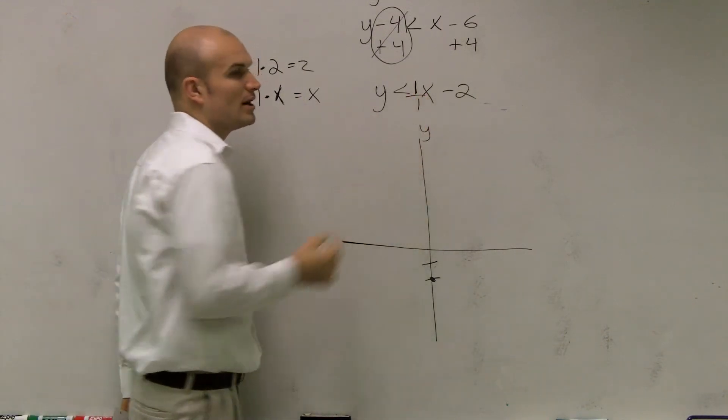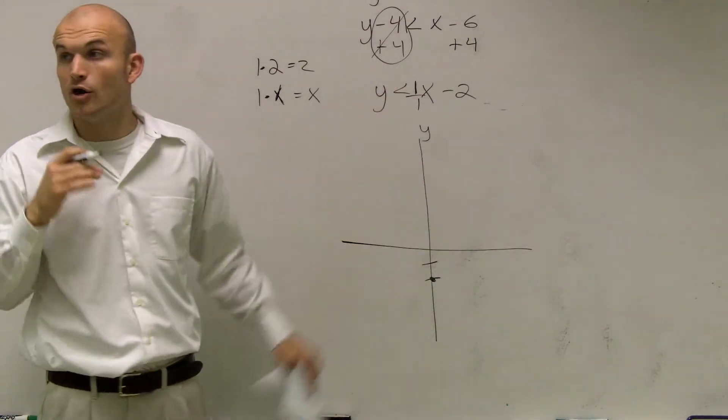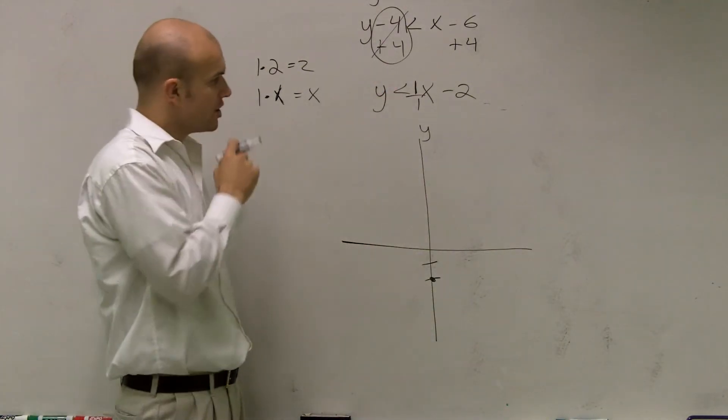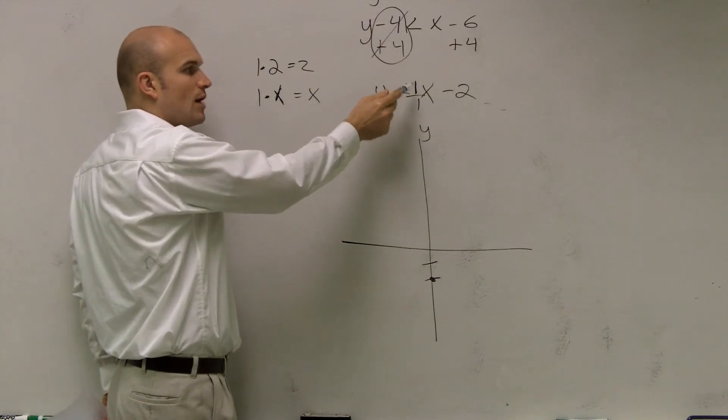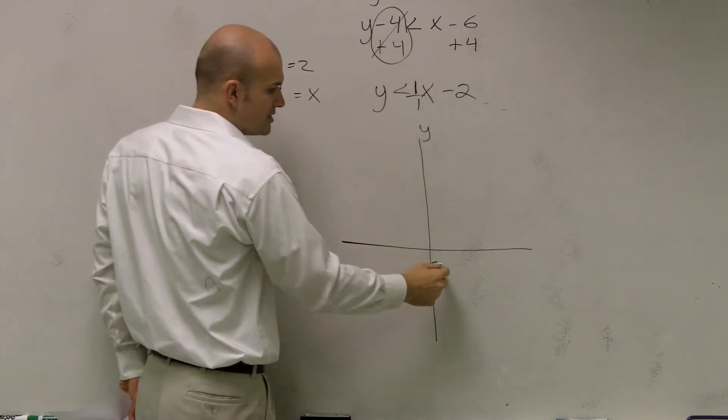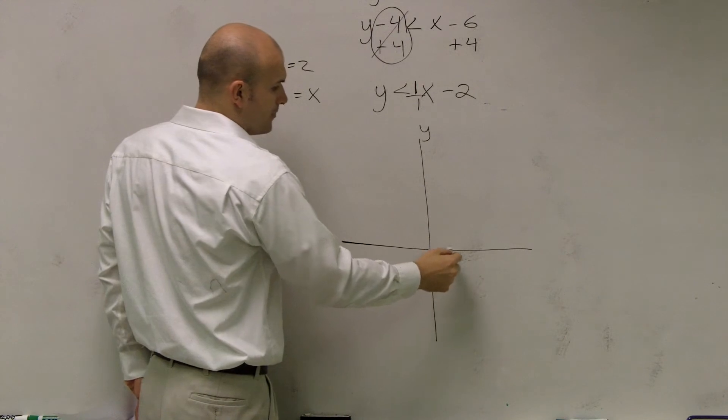And remember, we want our rate, we want our slope to be a ratio, so we can write it as 1 over 1, right? So now my slope tells me to go change in y over change in x. So I'm going to go up 1 to the right 1.